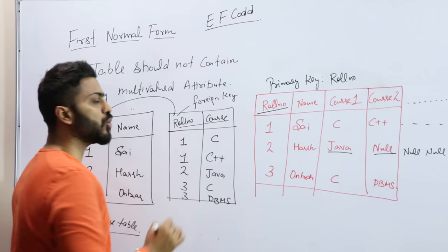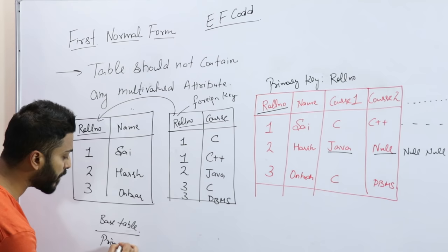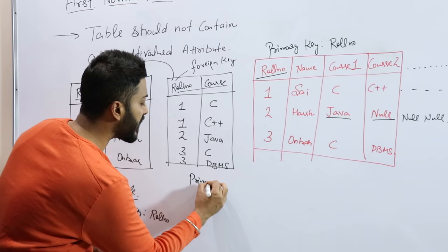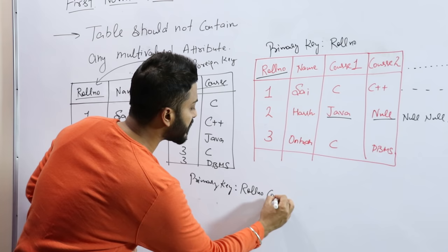If you see, what will be the primary key? Role and course combined will be the primary key. So I can represent it like the primary key of this table will be roll number. There is no foreign key in this because this is the base table.